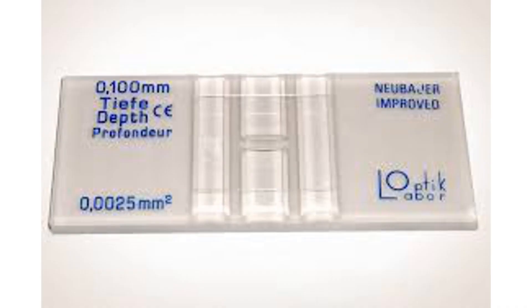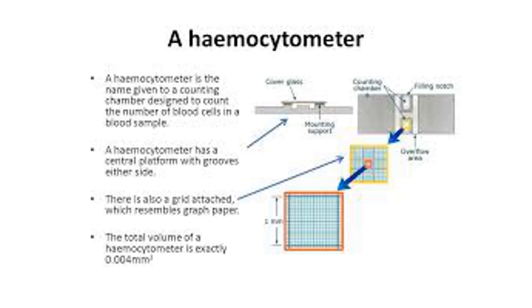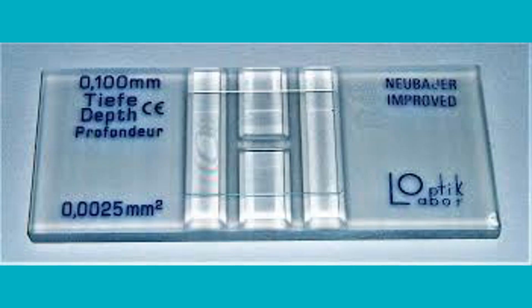Counting cells: Under a microscope, the cells within the grid squares are counted. Typically, cells that touch the top and left boundaries of a square are counted, while those touching the bottom and right boundaries are not, to avoid double counting.